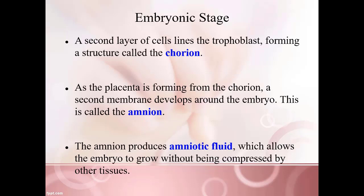Other features developing at this point include the chorion — a second layer of cells that lines the trophoblast — which protects and nourishes the developing embryo and helps with placenta development. A second membrane that develops around the embryo is called the amnion. The cells of the amnion produce amniotic fluid, which allows the developing embryo to grow without being pressed by surrounding tissues. When a woman's water breaks during labor, that is amniotic fluid coming out.